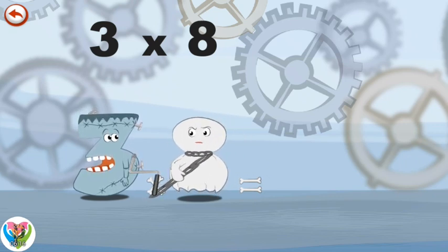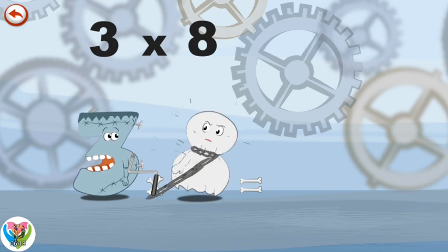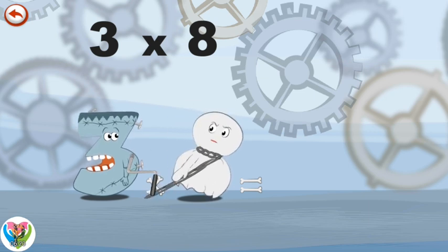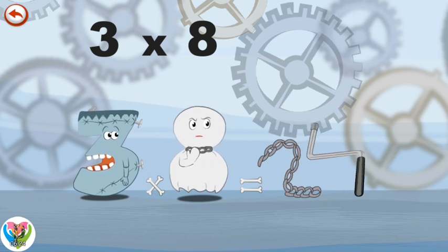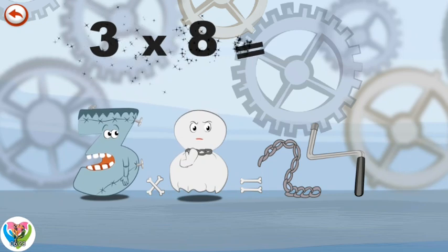Spooky 8 pulls as hard as he can to get free. He finally manages to break the chain in the shape of a 2, which whisks away the crank handle in the shape of a 4. 3 times 8 is 24.